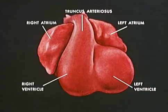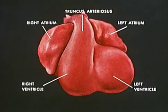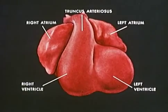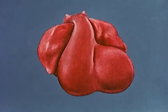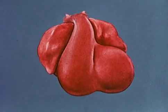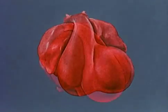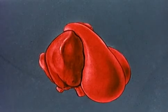A four-chambered heart is formed from this convoluted tube by the development of three septa partitioning the atria, the ventricles, and the truncus arteriosus. Although these septa develop simultaneously, they will be considered individually. By viewing the heart from the right side, partitioning of the atria and ventricles can be more easily visualized.